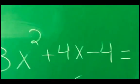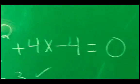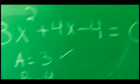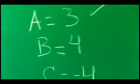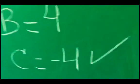B is going to be the one next to the x, and c is the one that is the constant which is by itself, which in this case is negative 4. Now, let's go ahead and use the calculator to solve this equation.